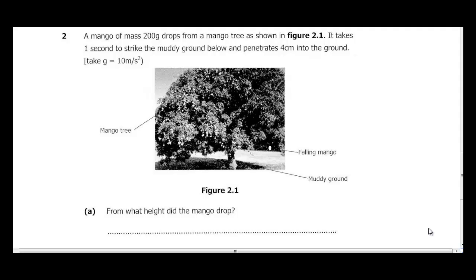We are trying to calculate the height the mango dropped from. We're given the mass of the mango which is 200 grams, the time it takes to strike the muddy ground which is one second, and 4 cm which was the distance it penetrated the ground. In order to solve this, the first equation we are going to be applying is v equals u plus gt.